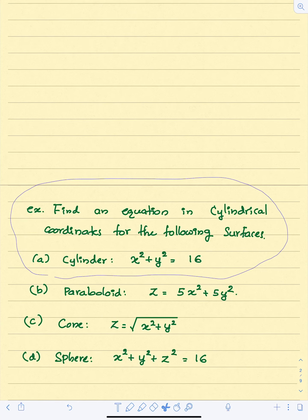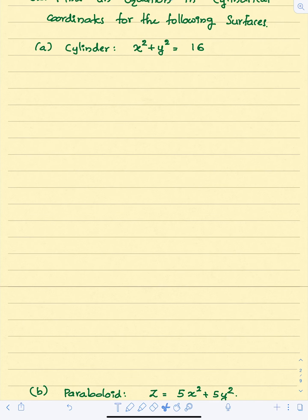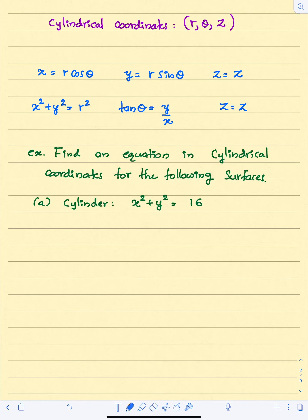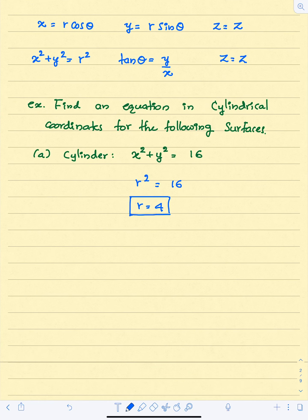Let's consider an example. We want to find an equation in cylindrical coordinates for a cylinder with equation x squared plus y squared equals 16. With respect to Cartesian coordinates the equation is x squared plus y squared equals 16, but our goal is to find its equation in cylindrical coordinates. We know that x squared plus y squared equals r squared, so we have r squared equals 16, and therefore r equals 4. This is the equation of the cylinder in cylindrical coordinate system, and the radius of this cylinder is 4.